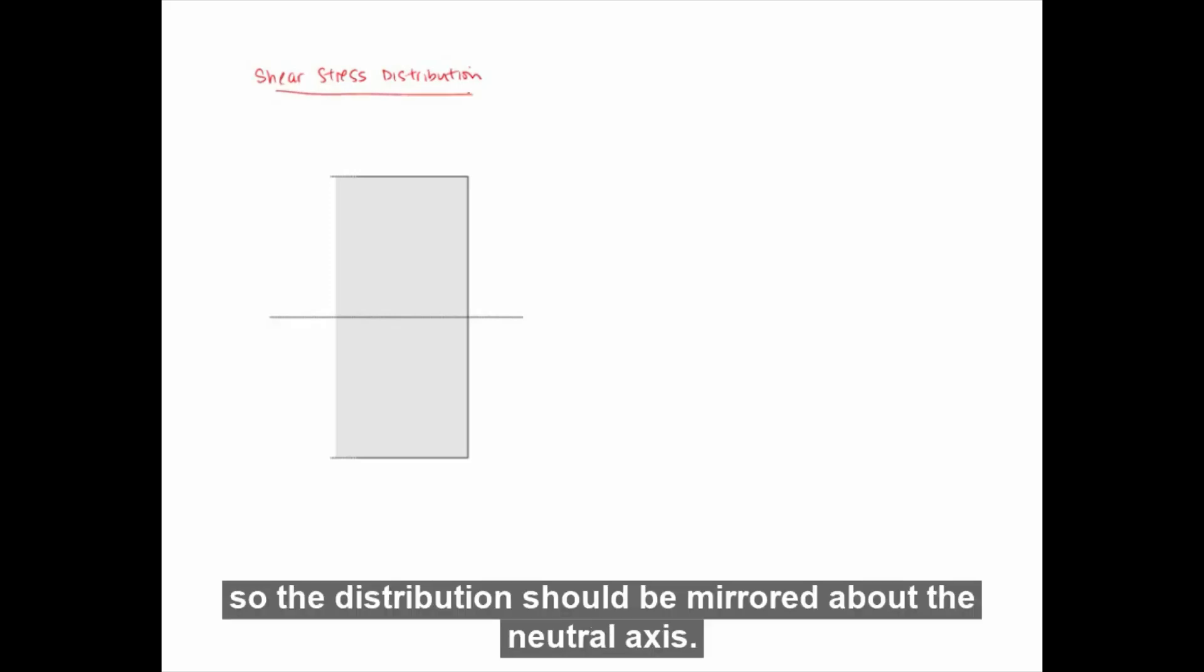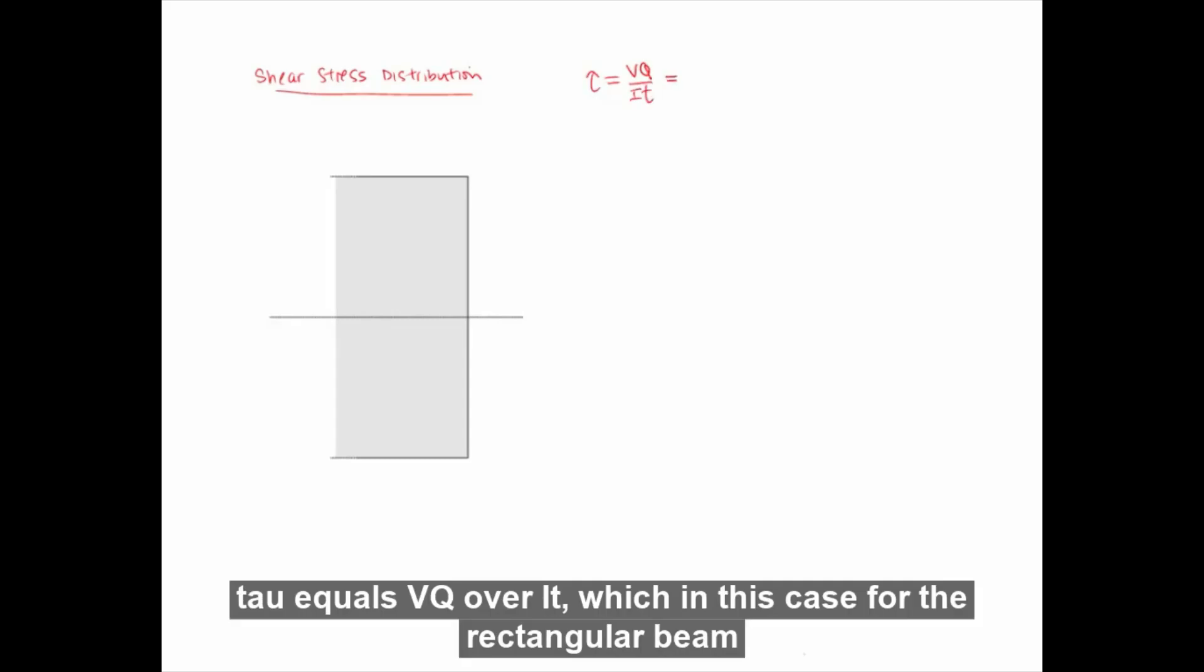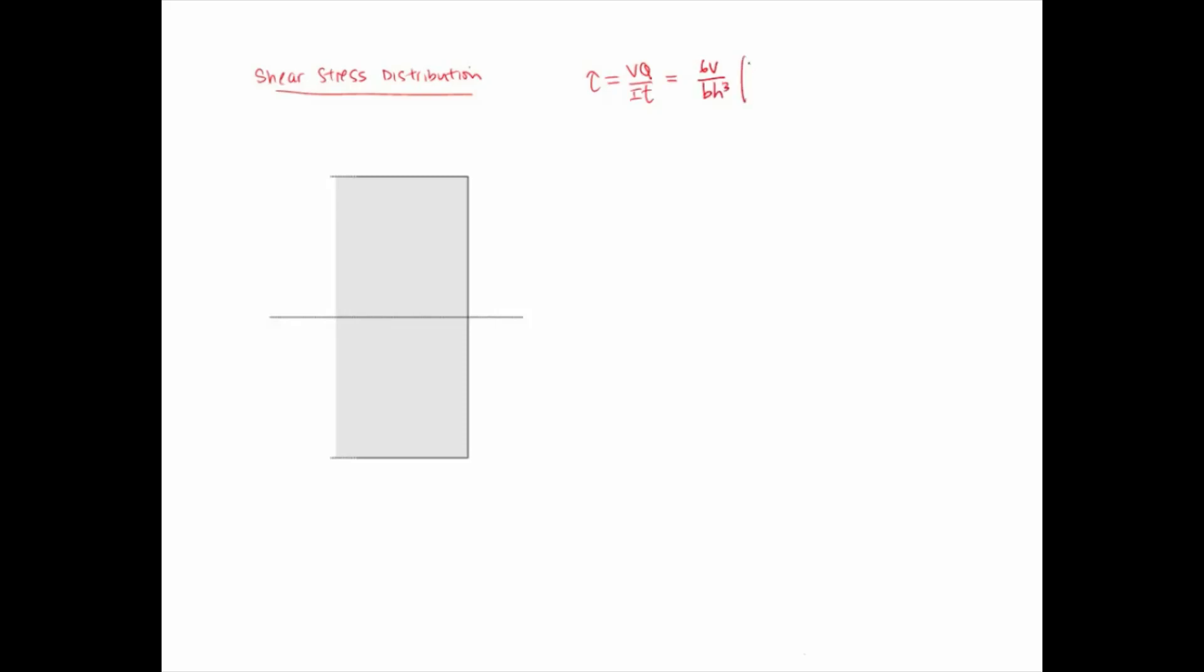Now let's move on to draw the shear stress distribution across the beam section. The cross section is symmetric about the neutral axis, so the distribution should be mirrored about the neutral axis. Rewriting the expression for the shear formula we found earlier, here, τ equals VQ over IT, which in this case for the rectangular beam is 6V over BH cubed times H squared over 4 minus Y squared. This is for the rectangular beam.